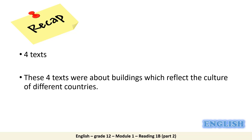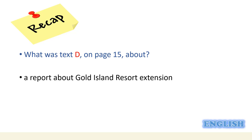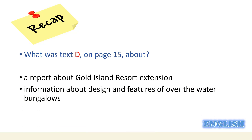As you remember, text A was about building igloos out of snow. Text B was about building a resort made of a bunch of tree houses above the forest. Text C was about constructing an eco-friendly suburb consisting of artificial islands and floating houses. Text D was a report about the Gold Island Resort extension, giving information about the design and features of over-the-water bungalows.